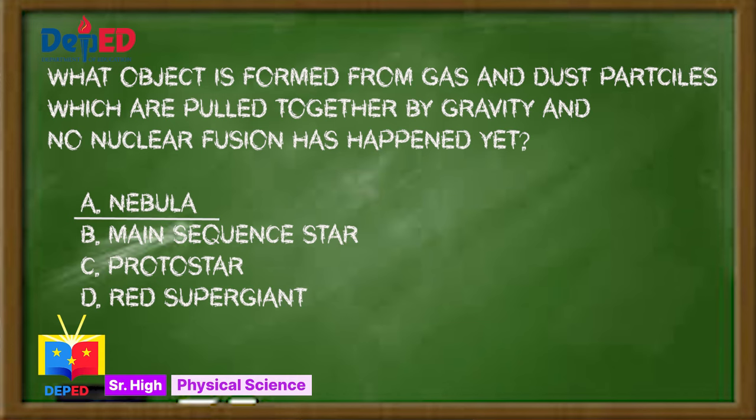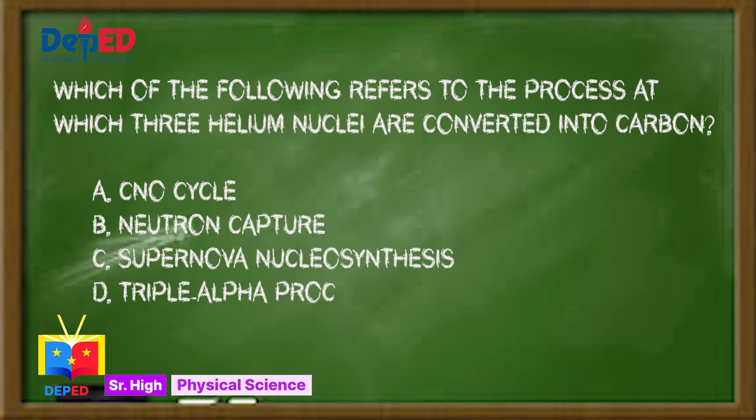Question number four: Which of the following refers to the process at which three helium nuclei are converted into carbon? A. CNO cycle, B. Neutron capture, C. Supernova nucleosynthesis, or D. Triple alpha process. If you answer D, then you are correct. Triple alpha process.